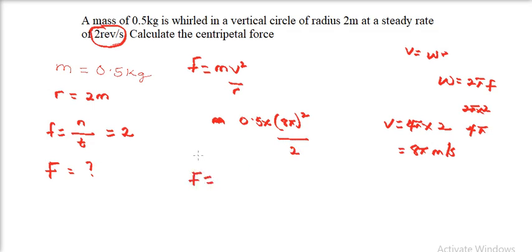So our F is now, let's calculate this in the calculator. So 0.5 multiplied by 8 pi, 8 pi all squared over 2. This will give us the answer of 157.9. So our centripetal force is 157.9 newtons.